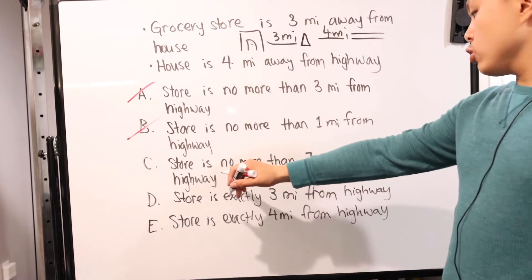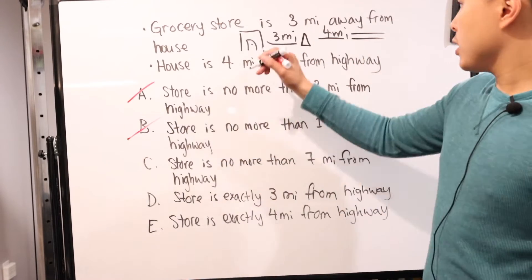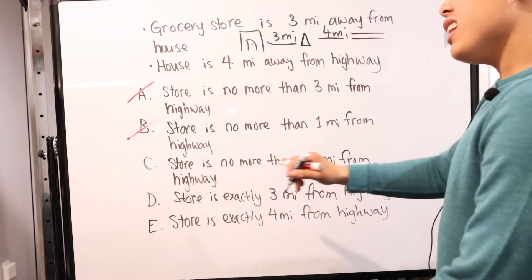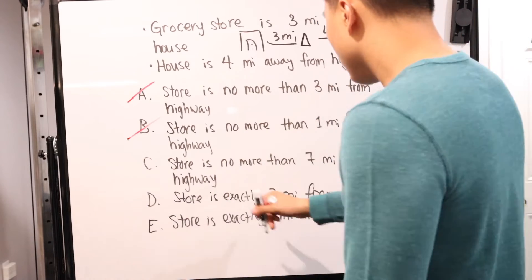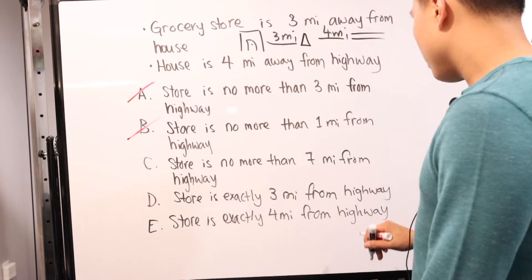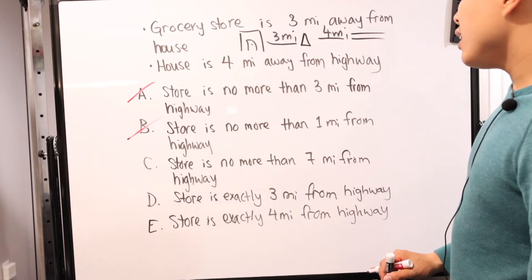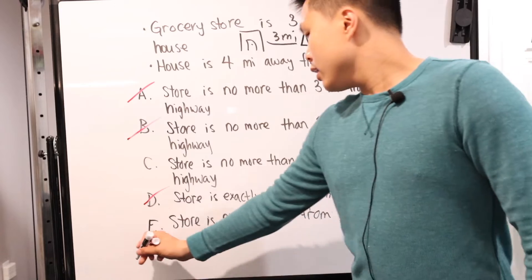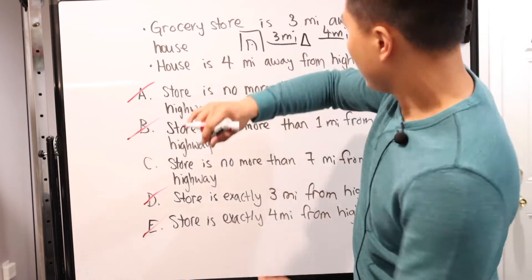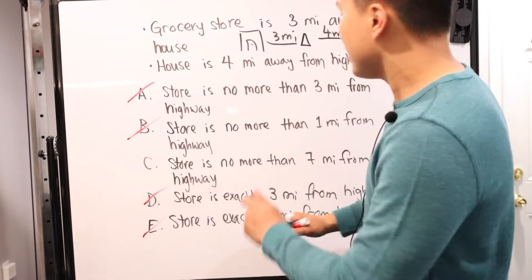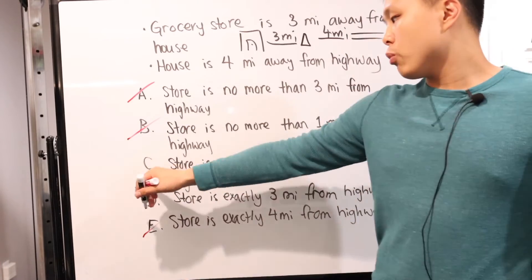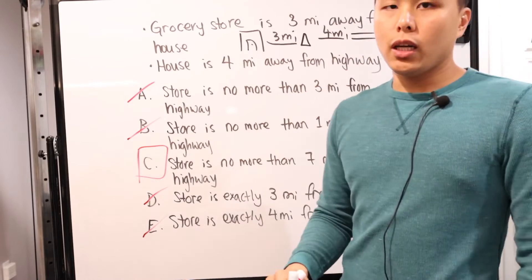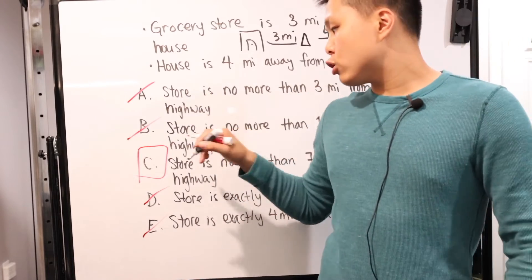Option C says the store is no more than seven miles from the highway. Even in a straight line, three plus four is seven, so it can't be more than seven. Let's hold on to that and see if we can break the others. Option D says the store is exactly three miles from the highway — not necessarily, because any angled arrangement breaks that. Option E says exactly four miles — doesn't work either. So just like that, we've eliminated A, B, D, and E. The only possible answer is C.